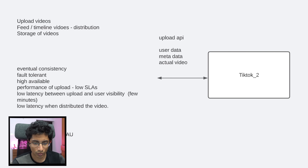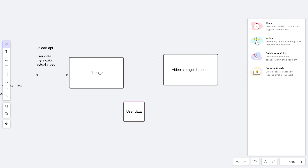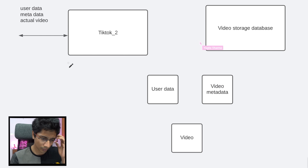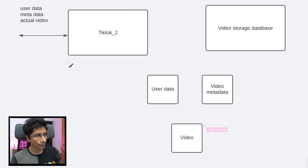One is user data, two is video metadata, and three is the actual video files. I'll come back to storing user data and video metadata, but first priority I'm going to give to store video data. We know that video data has to be stored in a storage from where reads are easily accessible, and there is going to be a lot of load because one video would be consumed by millions of people on average.